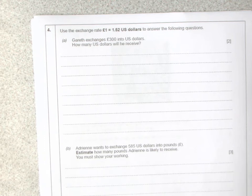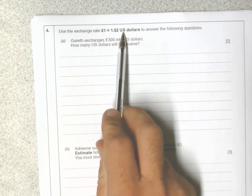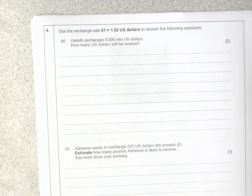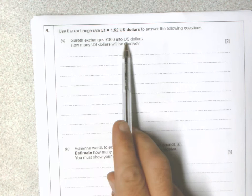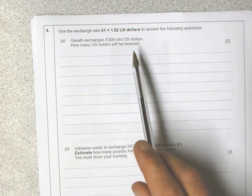Okay, question four says use the exchange rate 1 pound equals 1.52 US dollars to answer the following questions. Part (a): Gareth exchanges 300 pounds into US dollars. How many US dollars will he receive?